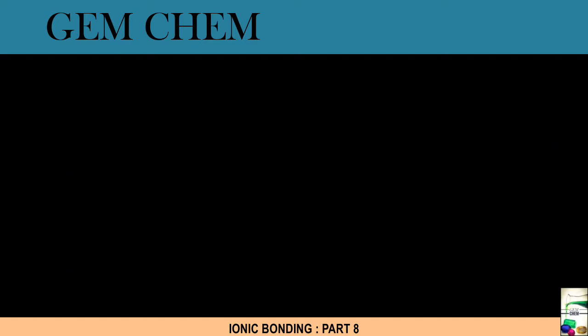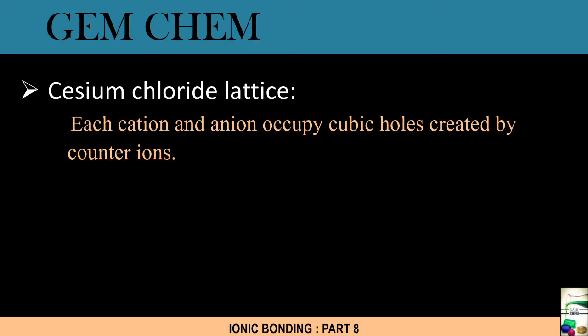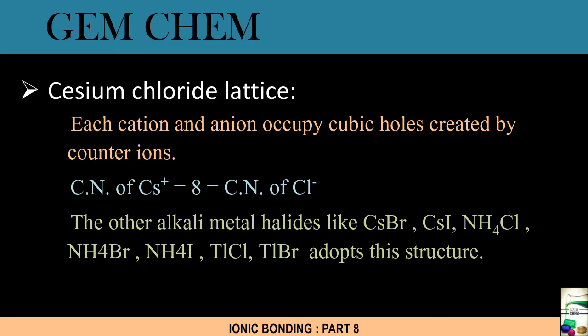Next lattice of discussion is cesium chloride lattice or cesium chloride structure. Here, cesium chloride has each cation and anion placed in cubic holes created by counter ions, and the coordination number in this case is 8 since it is a cube. The structure is also adopted by CsBr (cesium bromide), cesium iodide, NH4Cl, NH4Br, NH4I, thallium chloride, and thallium bromide.